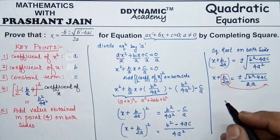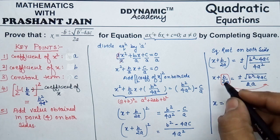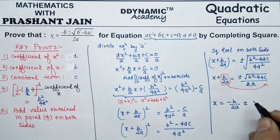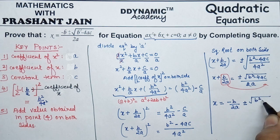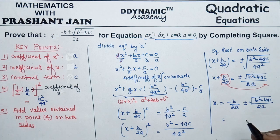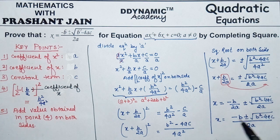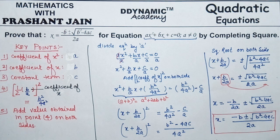After shifting b/(2a) from the left-hand side to the right-hand side, we get x = −b/(2a) ± √(b² − 4ac)/(2a). Since both terms have denominator 2a, taking the LCM gives x = (−b ± √(b² − 4ac)) / (2a). This is the quadratic formula, which we can apply to any quadratic equation when the roots are real.